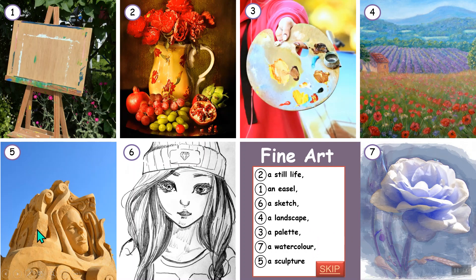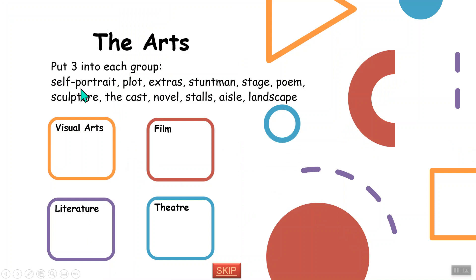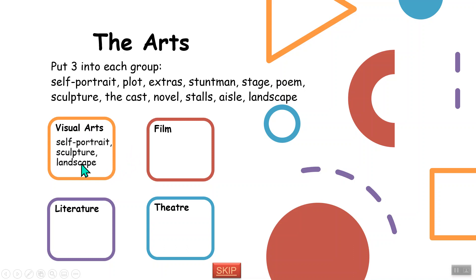We have these words: self-portrait, plot, extras, stuntman, stage, poem, sculpture, the cast, novel, stalls, aisle, and landscape — three in each group. Visual arts are things you see. We can put self-portrait, sculpture, and landscape in visual arts — these are all paintings, or a sculpture can be a beautiful shape.